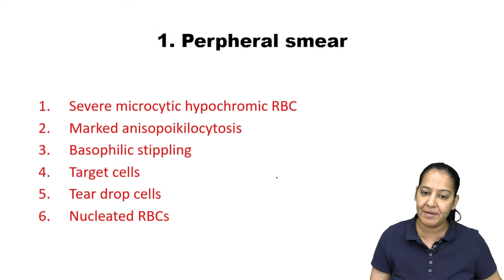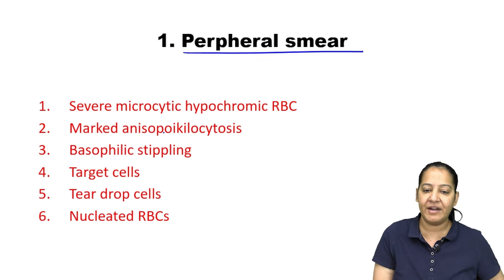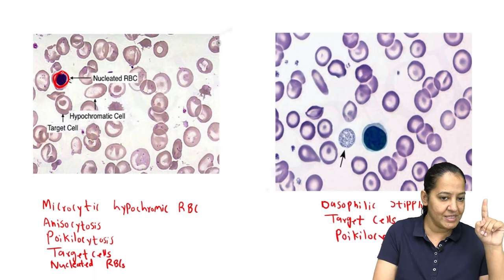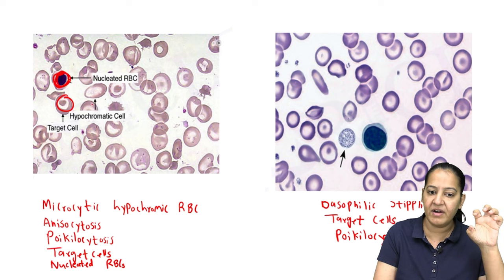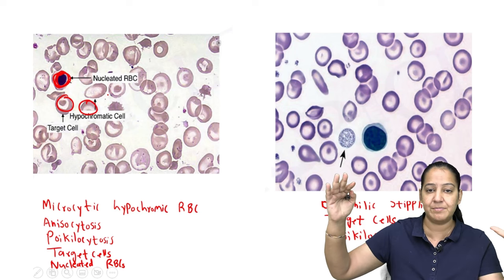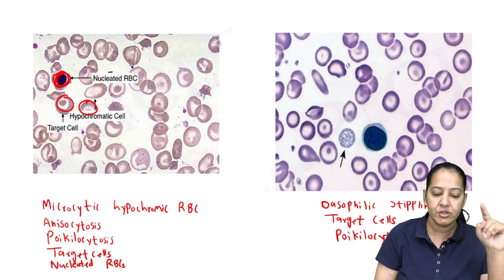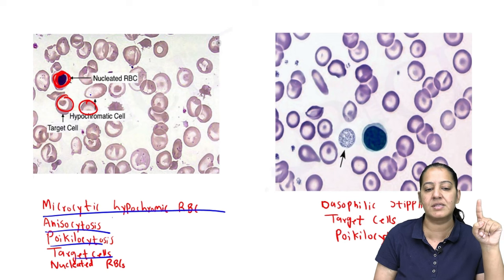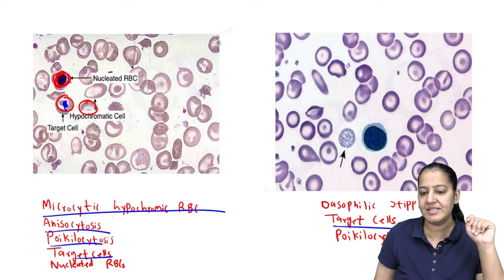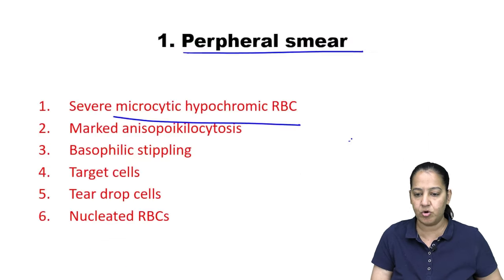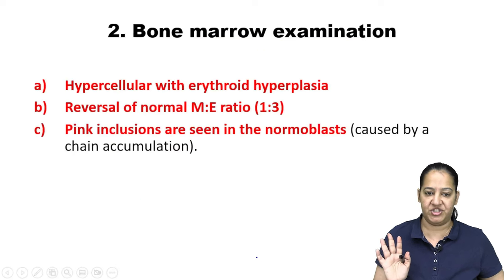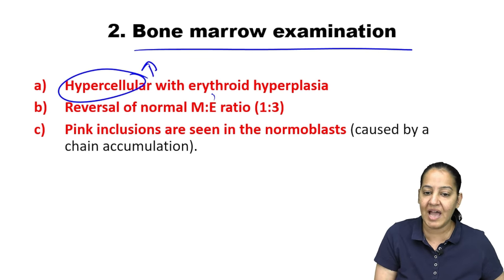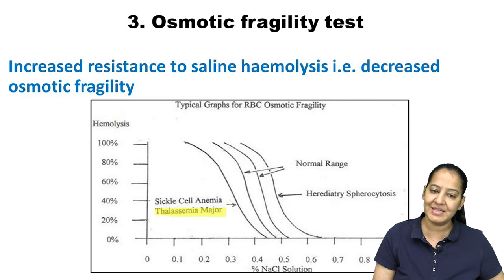For lab diagnosis of beta thalassemia major: on peripheral smear, you see microcytic hypochromic anemia — RBCs are smaller than a lymphocyte and have less color with an expanded central pallor. There is anisocytosis, poikilocytosis, target cells, and basophilic stippling. On bone marrow examination, it is hypercellular; the M:E ratio is reversed — myeloid is less, erythroid is more.